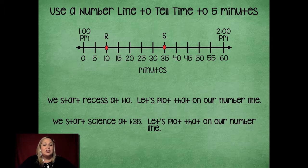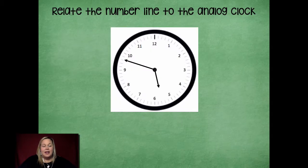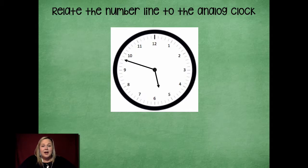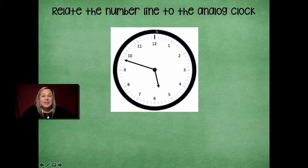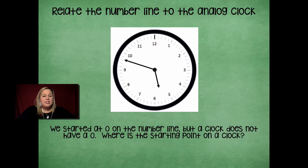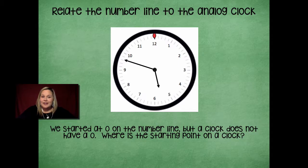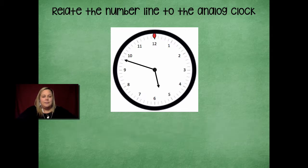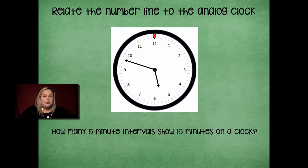Now let's switch to our analog clock. How is that number line similar to an analog clock? If you wrap a number line, you could take it and wrap it all the way around the clock — it would be the same. Your number line can represent the minutes on the clock. We start at zero on the number line, but a clock doesn't have a zero — the twelve represents zero, the starting point for minutes. How many five-minute intervals show 15 minutes on a clock?